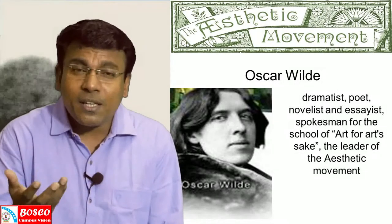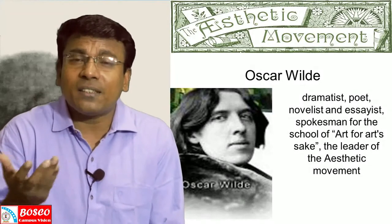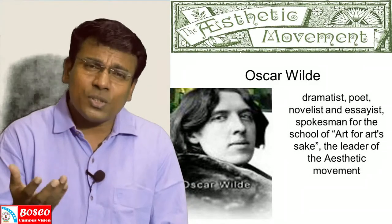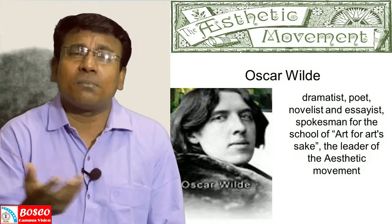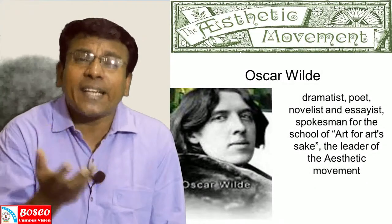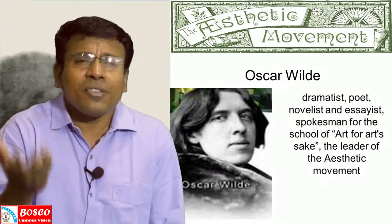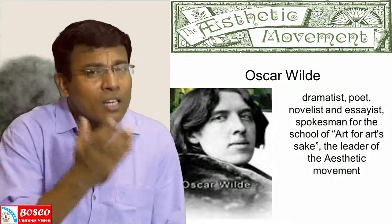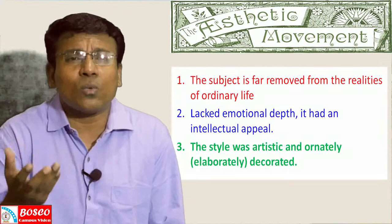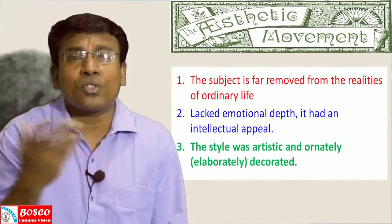Oscar Wilde was also imprisoned for two years in 1895, and he died in Paris. He wrote poetry, prose, and drama, and in all these genres he embodies the spirit of the decadent school. He was influenced by Walter Pater and the Pre-Raphaelites, who shared the same motto of Art for Art's Sake. Some of the important characteristics of his literary style are worth noting.